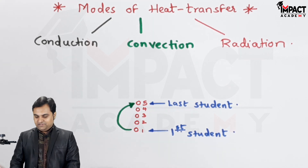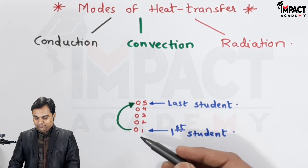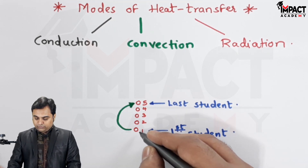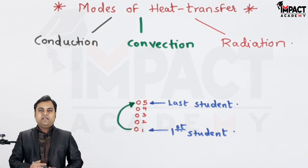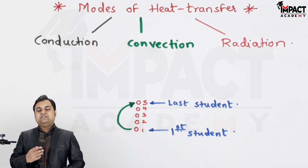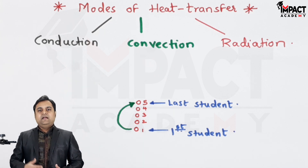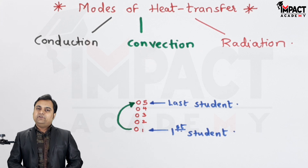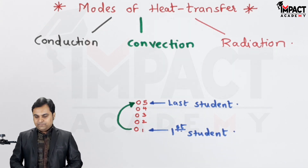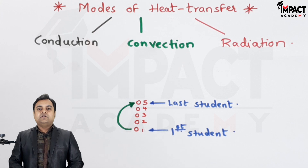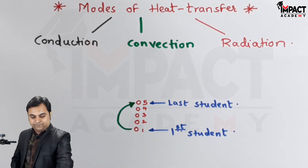To explain radiation, another method would be that the first student remains at their place and simply throws the book directly to the fifth student without passing through any intermediate medium. Such heat transfer is called radiation heat transfer, which does not require any medium — the molecule stays in its own place and heat is transferred by throwing. In short: conduction transfers heat molecule to molecule, convection involves the molecule leaving its place, and radiation requires no medium.